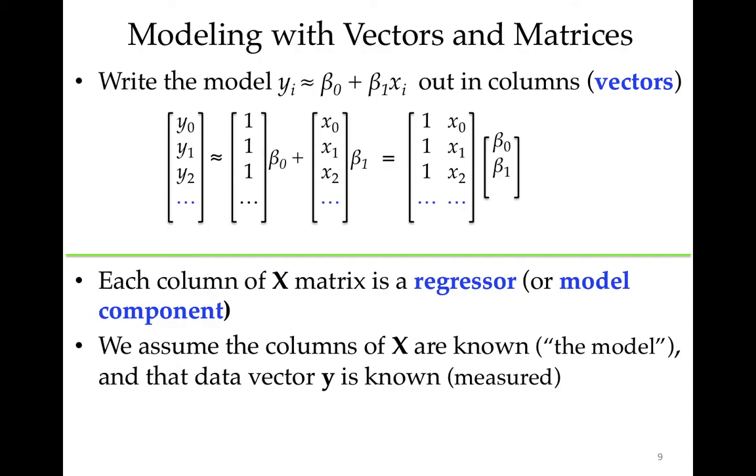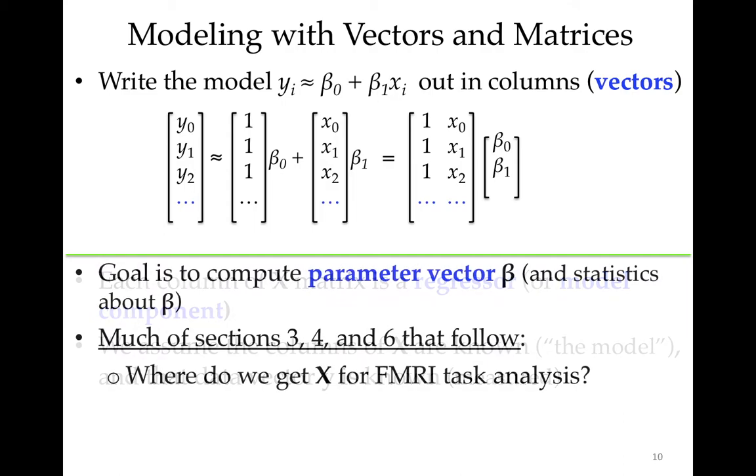So, again, each column of the X matrix is a regressor, or sometimes called a model component. And we assume that the columns of X are known. X is usually called the design matrix in the statistics literature. And we assume, of course, that the data vector is known, that it's reasonably measured. The goal is to compute the parameter β, and then some statistics about it. So that we have, say, β₀ is 5, and we'd also like to know what sort of a reasonable range of values we might have gotten - that is, 5 plus or minus 2, or 5 plus or minus 0.1. Those are very different answers, right?